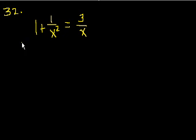But I think we can simplify it if we can just get rid of these x squareds in the denominator. The easiest way to do that is to multiply everything by x squared. So let's multiply both sides of this equation by x squared. And then we'll get x squared times 1 is x squared. x squared times 1 over x squared, that's just 1. And then x squared times 3 over x, that's 3x squared over x. x squared divided by x is just x. So that is equal to 3x.